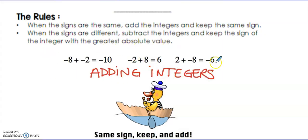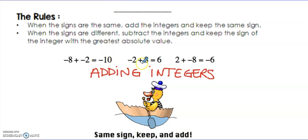Here are a couple of examples. Negative 8 plus negative 2 — they have the same sign, so we would add and keep the sign, so that would be negative 10.